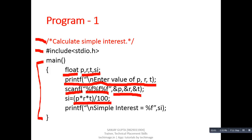To print the result we are using a printf statement. The backslash n means new line character. When this printf executes, 'simple interest equals to' will be printed as-is and the %f will be replaced by the value of SI. This is the explanation of the first program. Moving on to the second program: calculate area and perimeter of a rectangle.